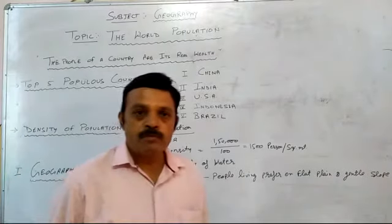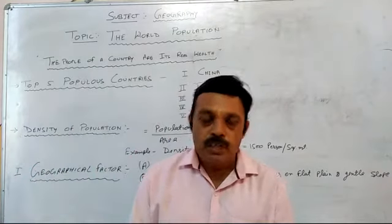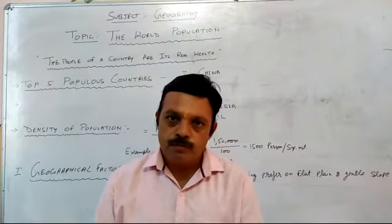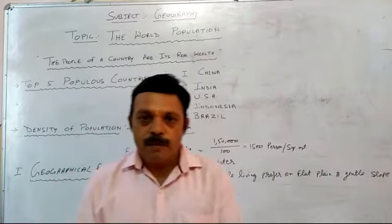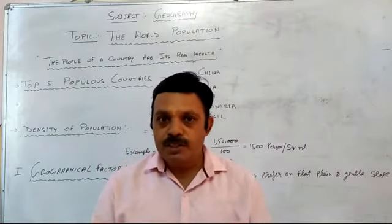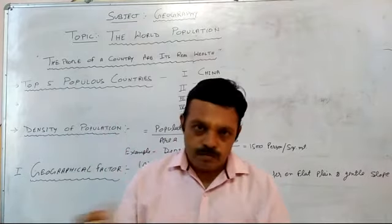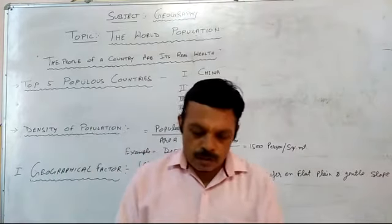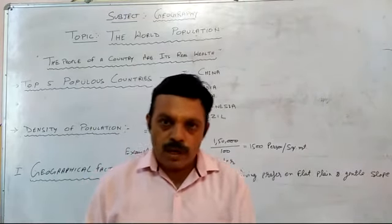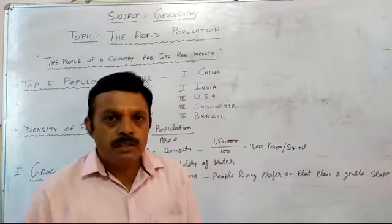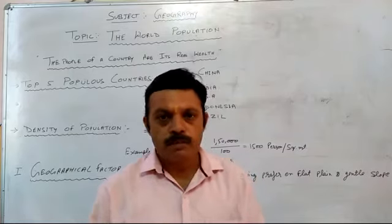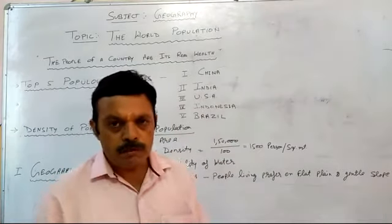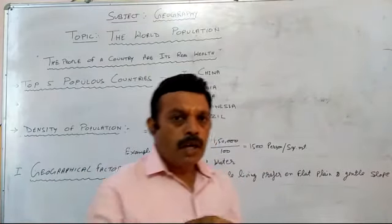The third factor is climate, also known as Jalvayu. This is a most important factor for population growth. Population growth is dependent on climate, and every person wants to live in a better climate. The climatic factors include air, land, soil, water, and vegetation. Besides these, other climatic conditions such as humidity, moisture, and air quality are also important.